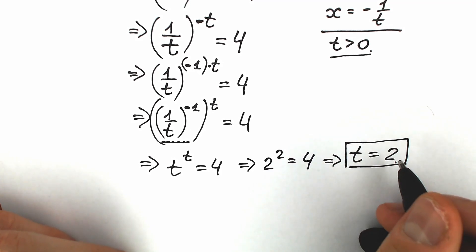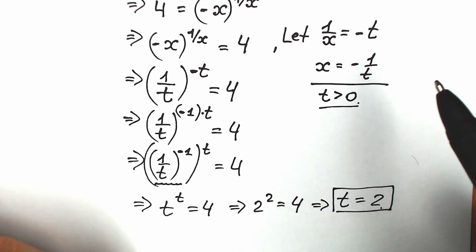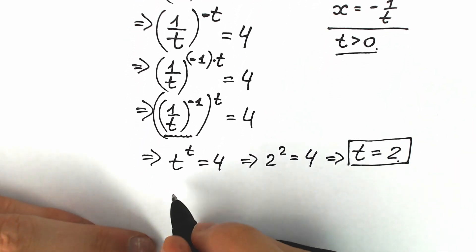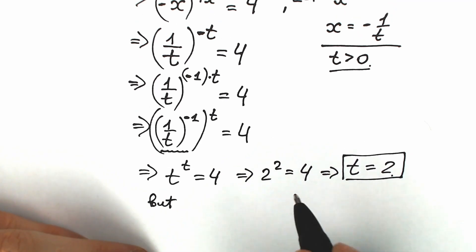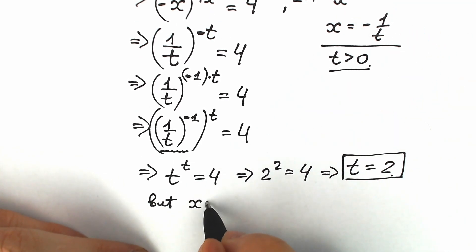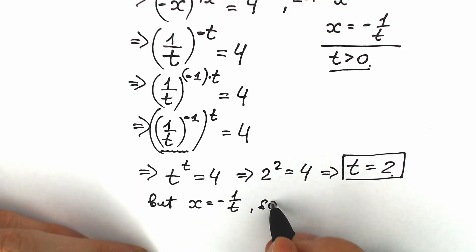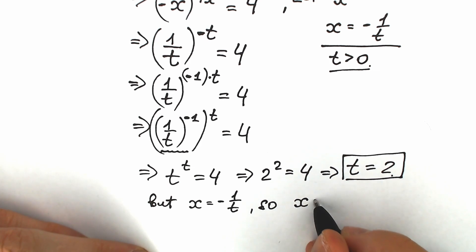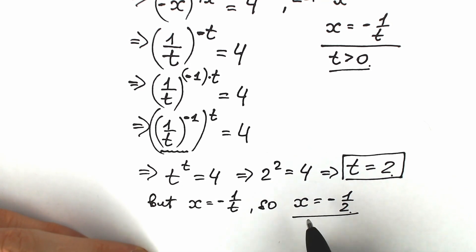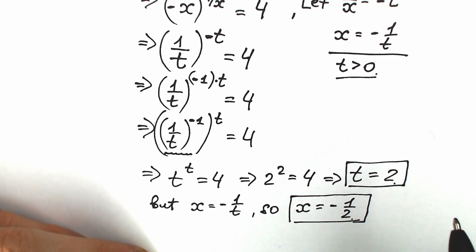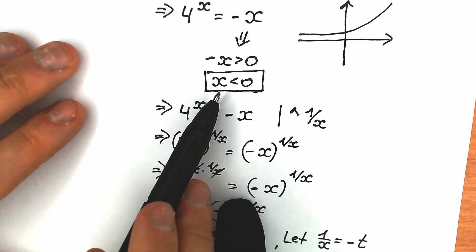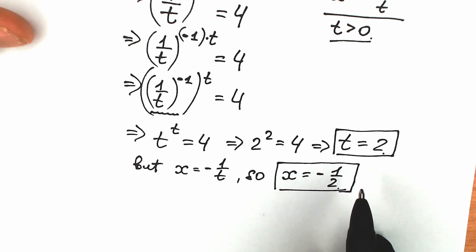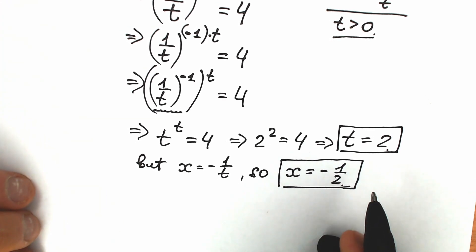But this is our t, and we need the answer in terms of x. Going back to our substitution x equals minus 1 over t, and plugging in t equals 2, we get x equals minus 1 over 2, i.e., minus one half. This is a great result because at the beginning we established that x needs to be less than 0, and minus one half is indeed negative — so everything checks out.